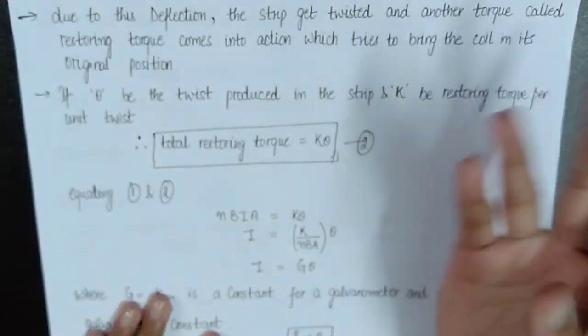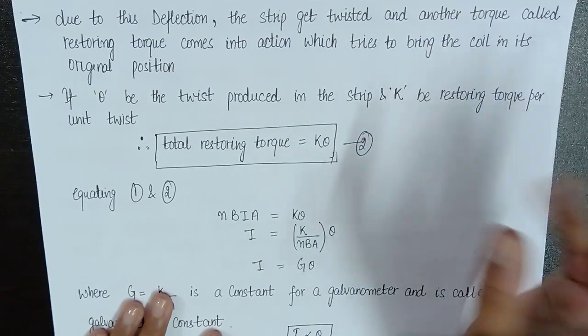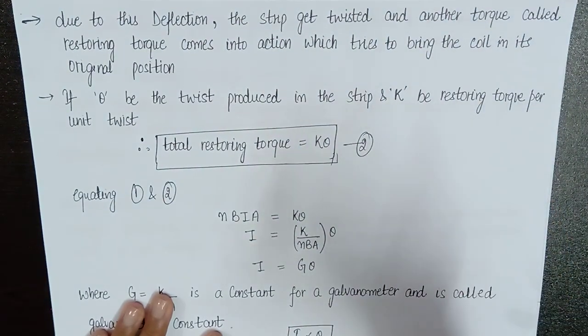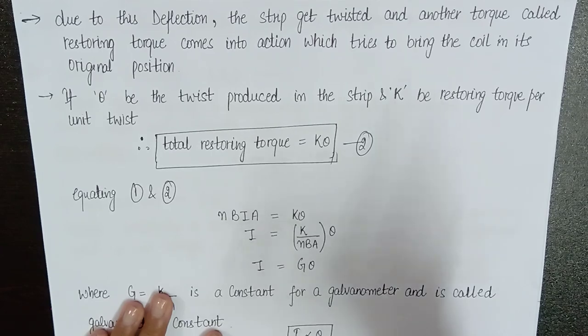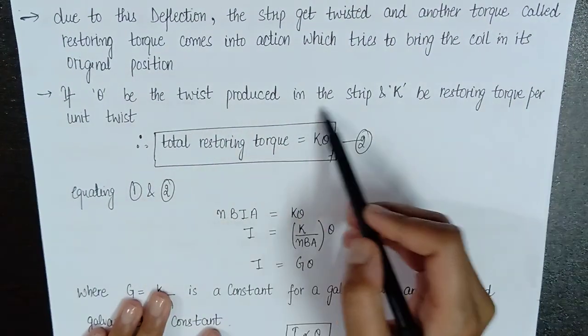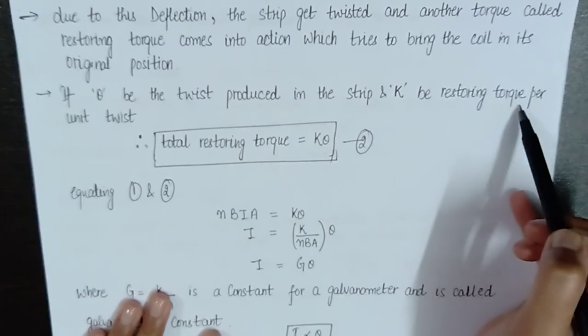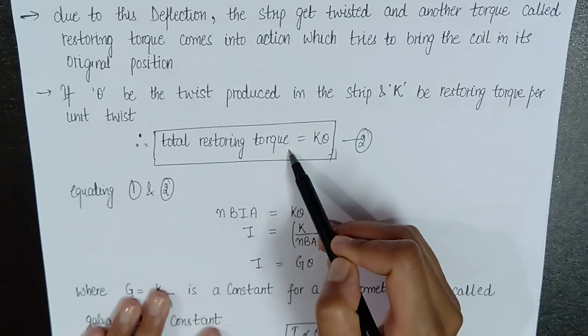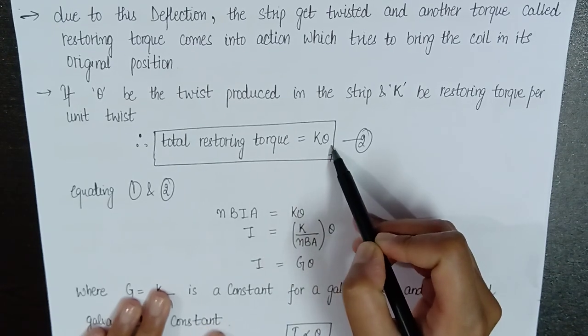But another torque, which we call restoring torque, will act and it will try to keep the coil in its original position and initial position. So, let if theta be the twist produced in the strip and K be the restoring torque per unit twist. In this case, the total restoring torque will be K into theta.